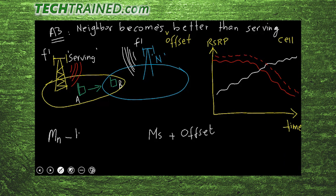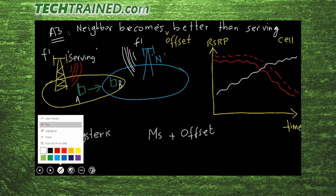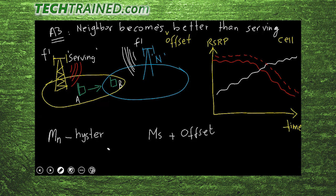Hysteresis parameters may be named differently across vendors but the idea is the same. After subtracting hysteresis, the coverage of the neighboring cell in the graph appears a little lower, but even after subtracting hysteresis it is still better than the serving cell. At this point — the triggering point — the UE will start running a timer.